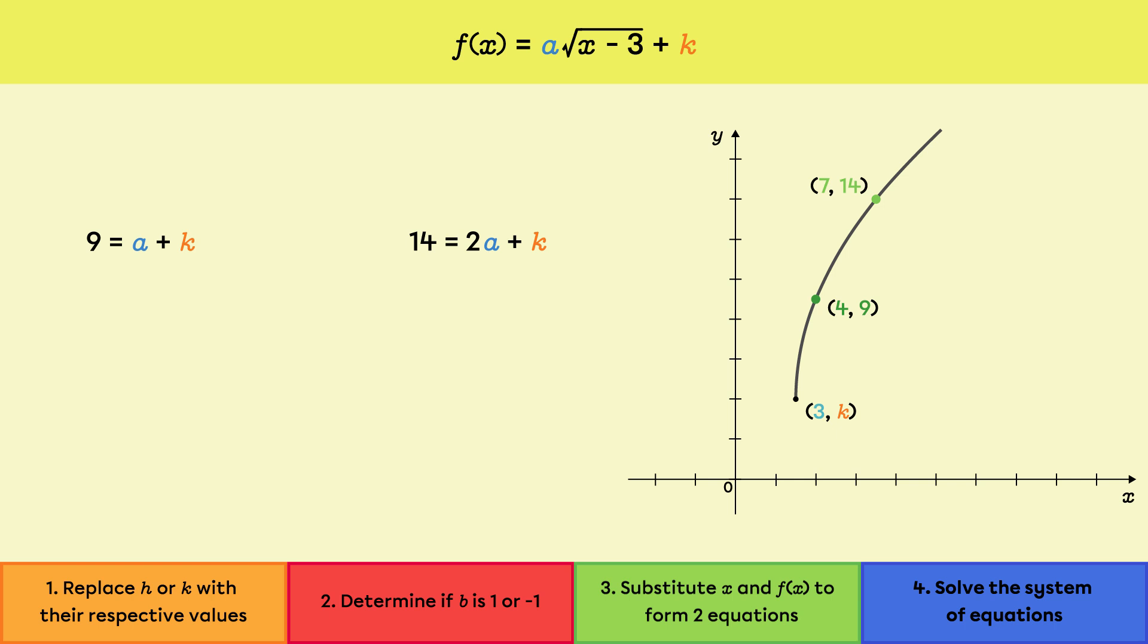When using the substitution method, one variable must be isolated in one of the two equations. Let's isolate k in the first equation. Subtracting a from both sides of the equation gives 9 minus a equals k.